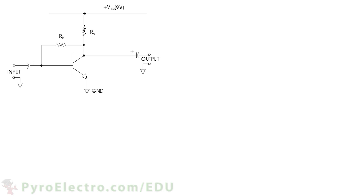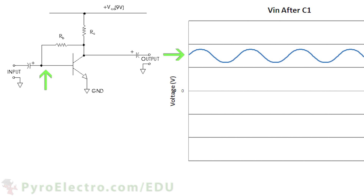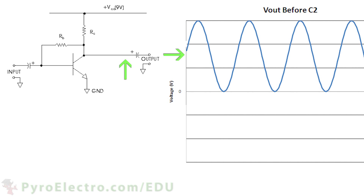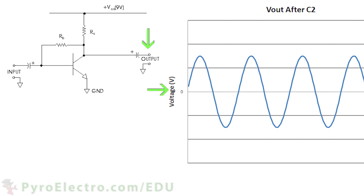So how does this amplifier work? Let's go through it step by step. First, we input some low voltage audio signal into the capacitor. As the low voltage signal goes through the capacitor, it is brought up to the DC voltage at the base pin. The signal tells the transistor to turn off and on as it oscillates, which creates an amplified output. Then, the final capacitor brings that output back to AC by blocking the extra DC voltage.